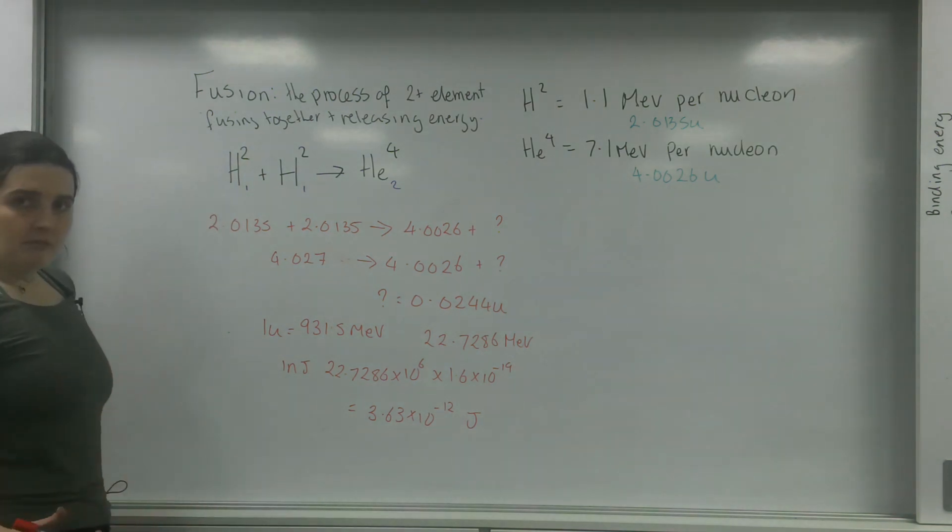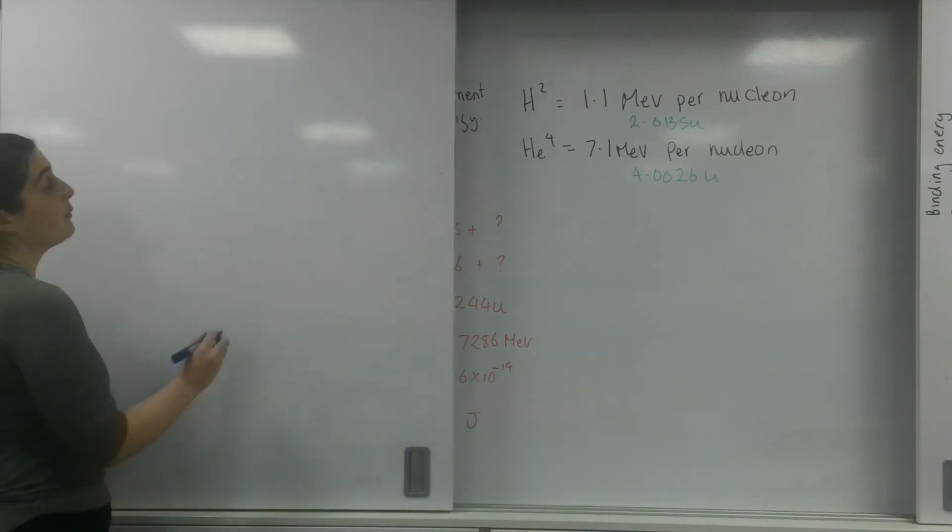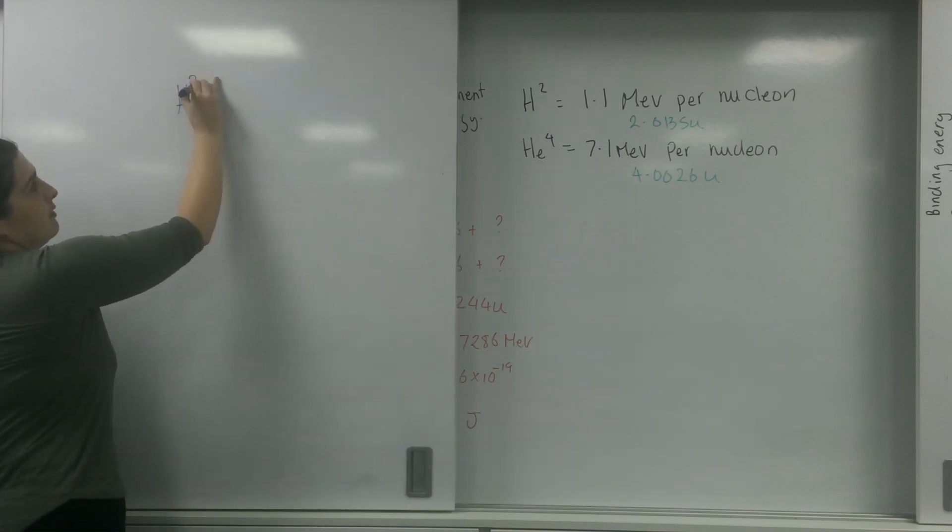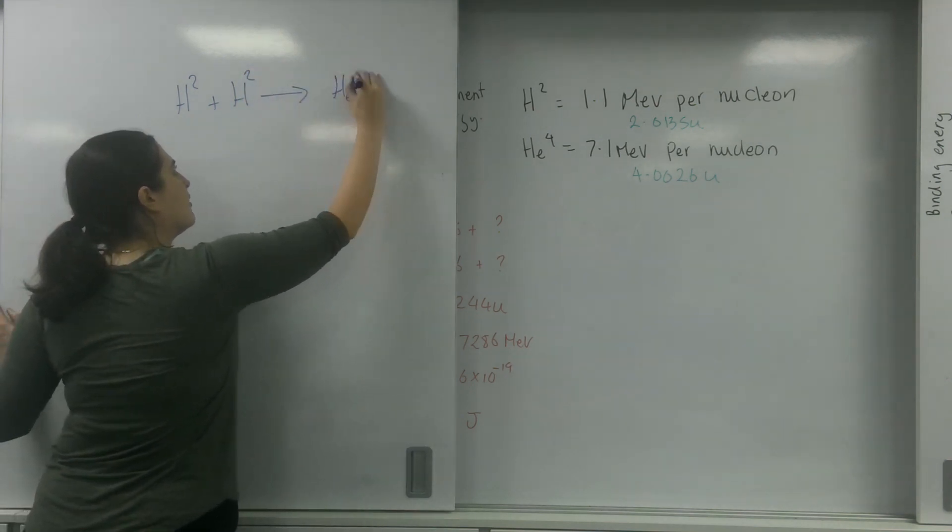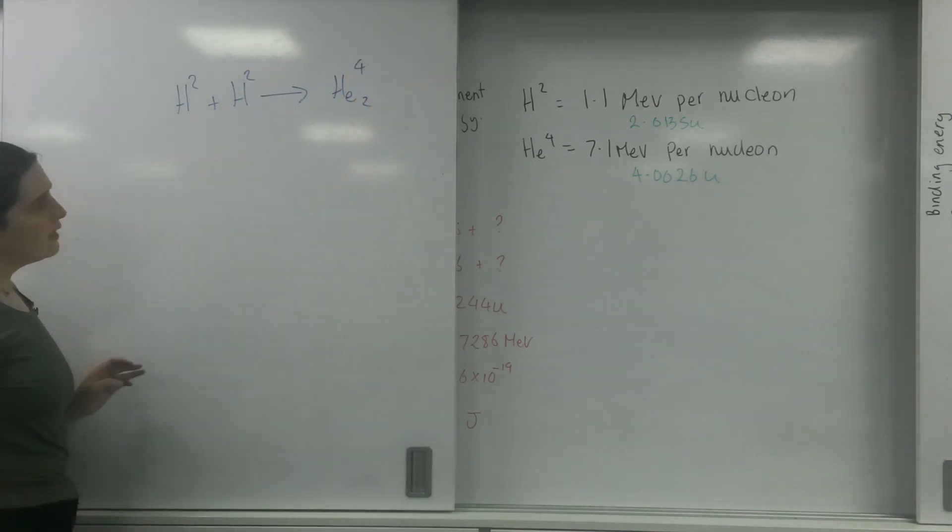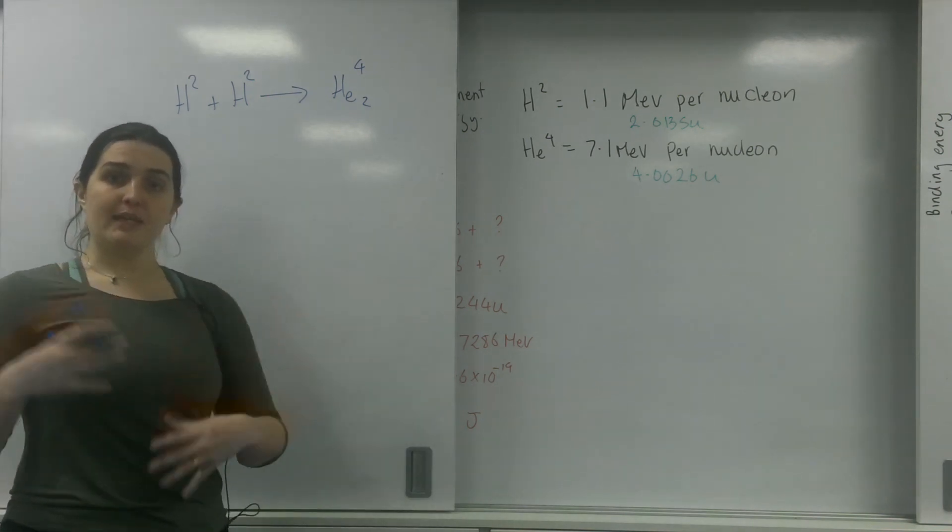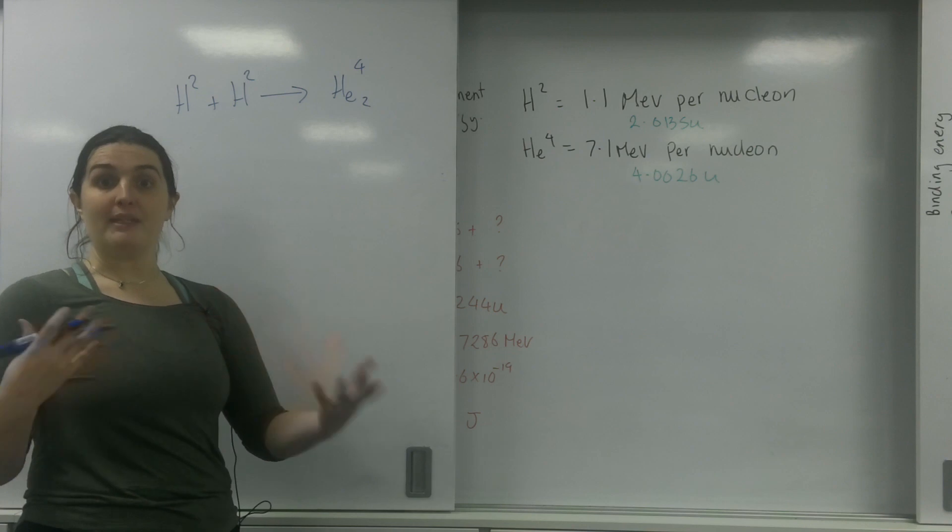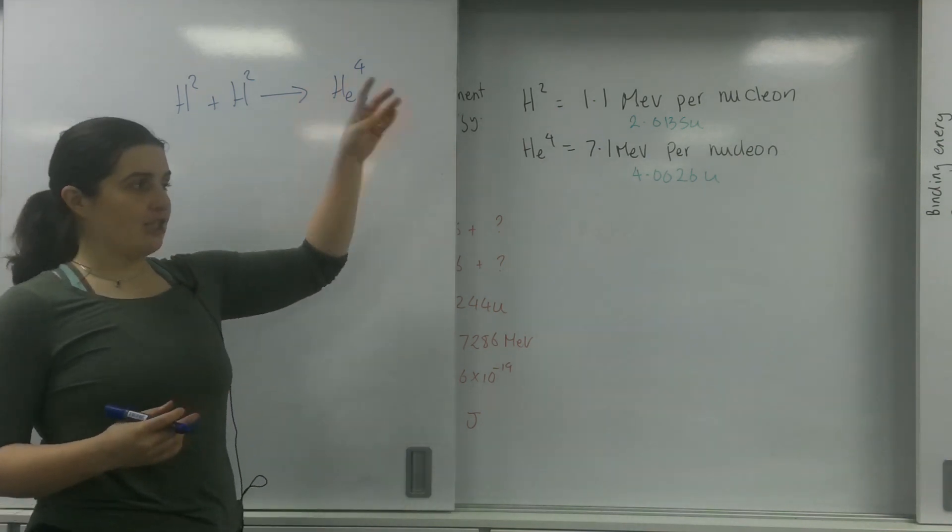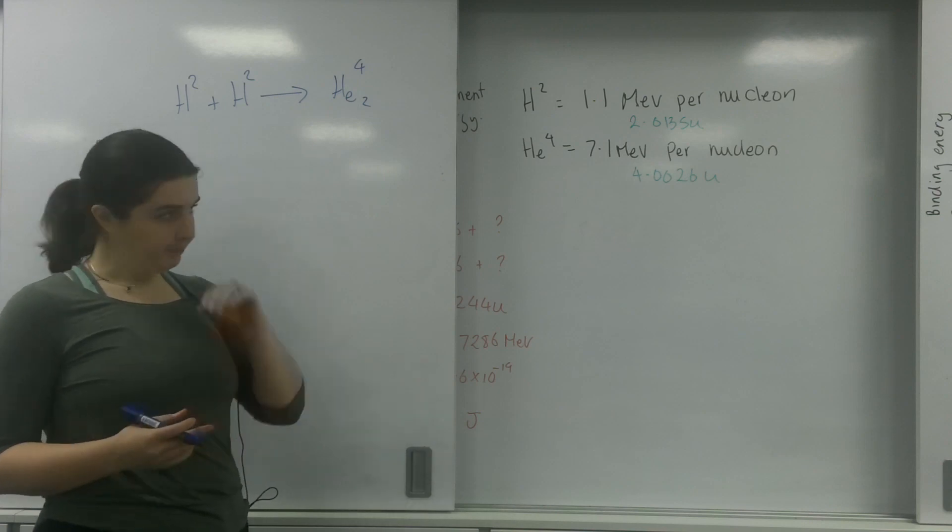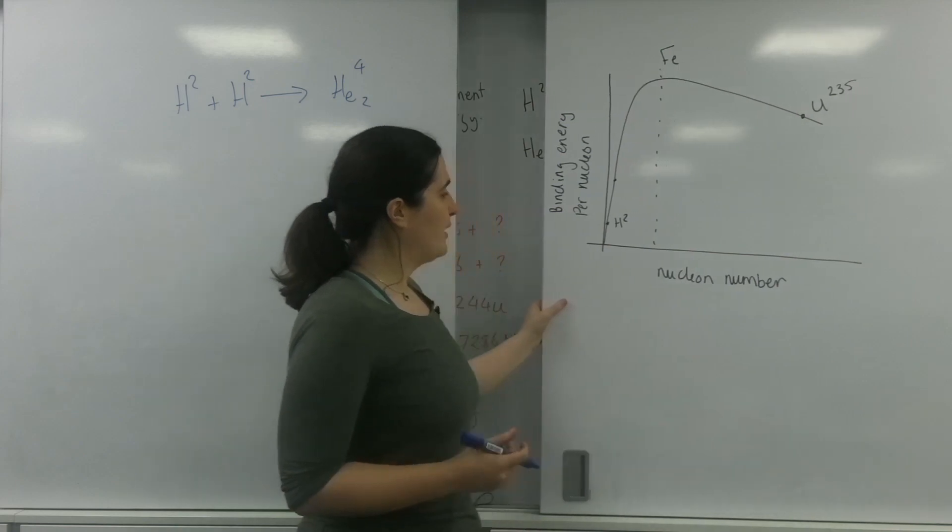So what I'm going to do now is I'm going to do the same thing, but look at the binding energy. So I know the energy per nucleon, which means I have to times that by how many nucleons I have. This data I actually got from a graph.